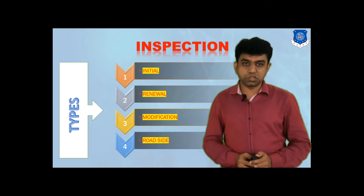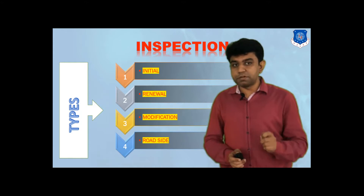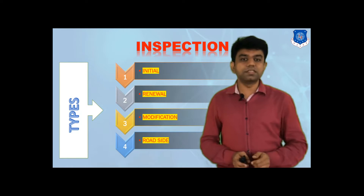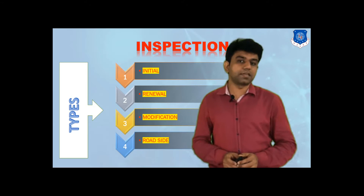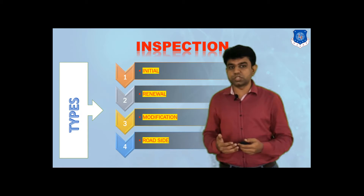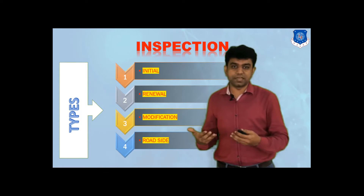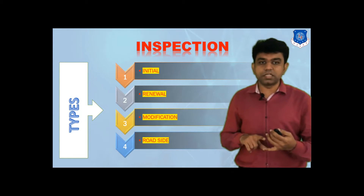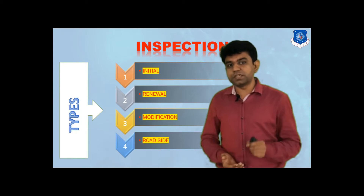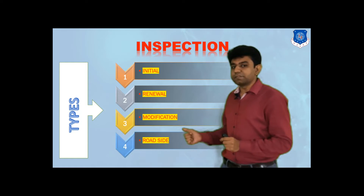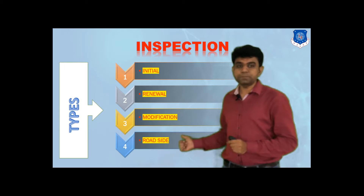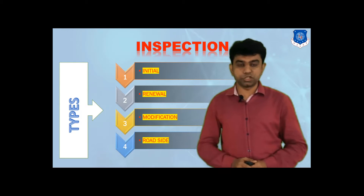The third category is modification inspection. Sometimes car modifications are done — in India, DC Motors is very famous for that. While driving, you may notice vehicles that have been modified, with changes made to the length, width, and height of the vehicle. Such vehicles in which modification has happened need to be inspected again. That falls under the third category.